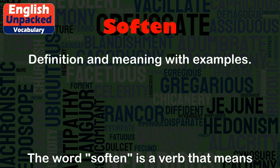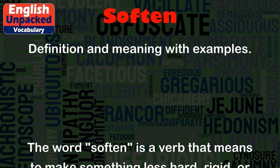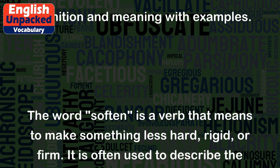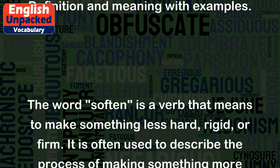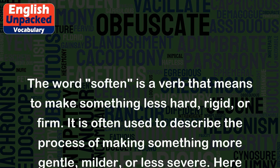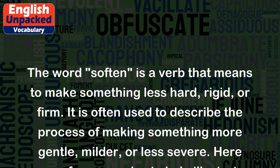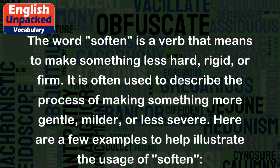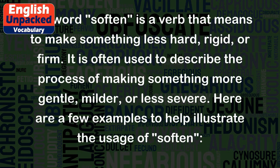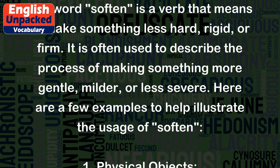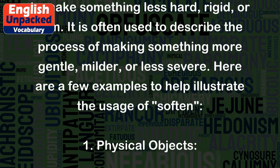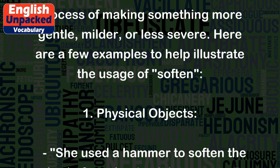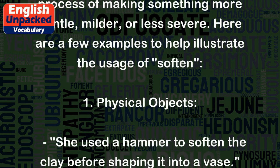Soften. The word 'soften' is a verb that means to make something less hard, rigid, or firm. It is often used to describe the process of making something more gentle, milder, or less severe. Here are a few examples to help illustrate the usage of 'soften'.